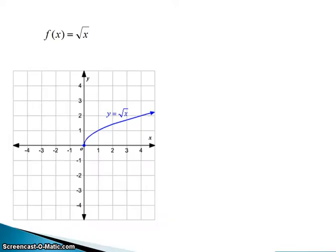This is the square root parent function. It is f of x equals the square root of x, or you can always write it with a y instead of f of x. To graph a square root function, you really have to be able to identify the domain and range, because that tells you where you start and, in many cases, where you end.